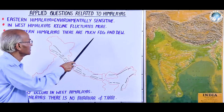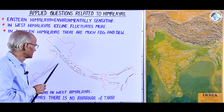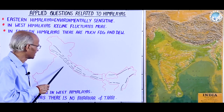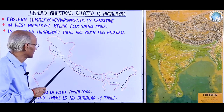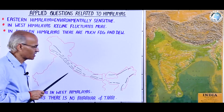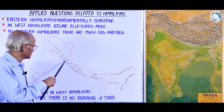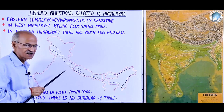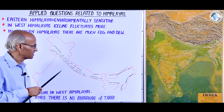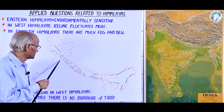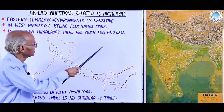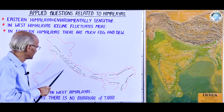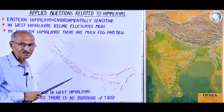Contrary to Eastern Himalayas, the Western Himalayas does not have rich fog and dew. During summer, when the Thar Desert is heavily heated, it raises convectional currents to several kilometers in height, warming the atmosphere. As a result, the relative humidity near Rajasthan decreases, and dense fog and dew do not develop. This is the reason that the Eastern Himalayas has much fog and dew while the Western Himalayas, due to the impact of the Rajasthan hot desert, lacks it.